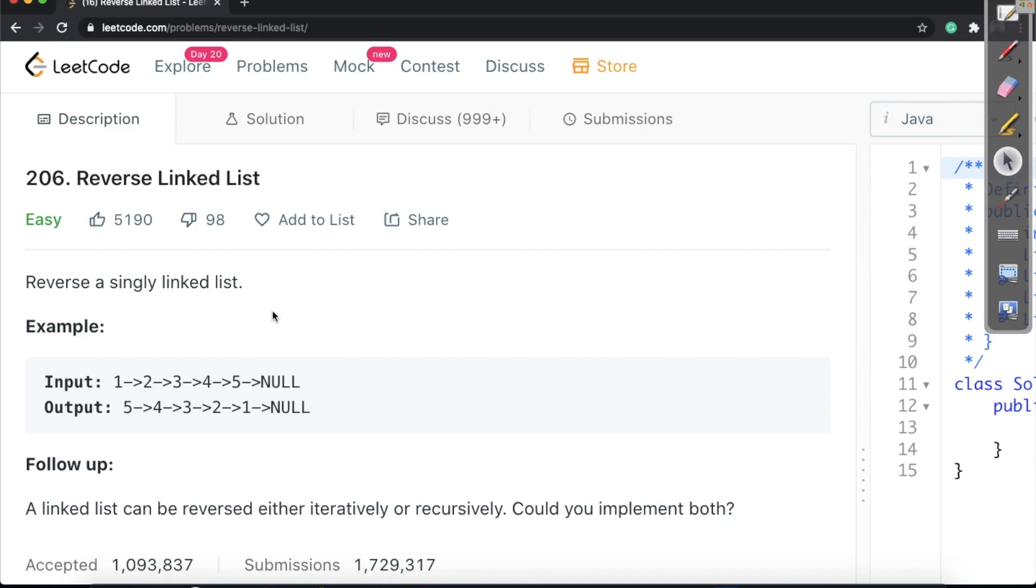If I have a head pointing to 1, 2, 3, 4, 5, I should be getting 5 as the head after reversal. A linked list can be reversed either iteratively or recursively. Iteratively means we will be using some for loop or while loop, and recursively means we will be calling the function within the function. We will implement both, but in this particular video we will be talking about the iterative solution to reverse the linked list.